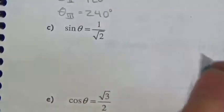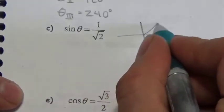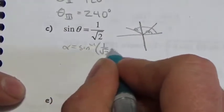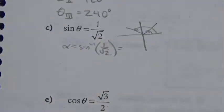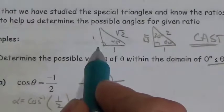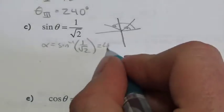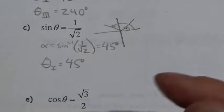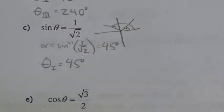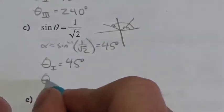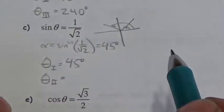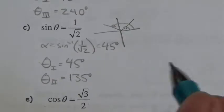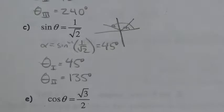Next: sine of theta equals positive 1 over root 2. Sine is positive in quadrants 1 and 2, so I'm looking for angles there. The root 2 appears in the 45-45-90 triangle, so the angle must be 45 degrees. In quadrant 1, the reference angle equals the rotation angle, so theta is 45 degrees. In quadrant 2: 180 minus 45 equals 135 degrees. Notice we almost always get two angles.